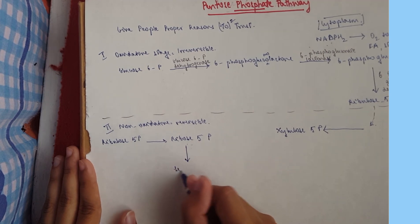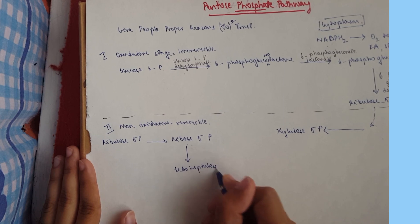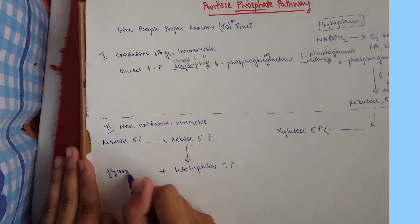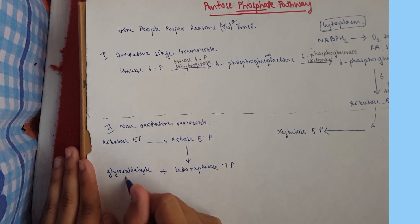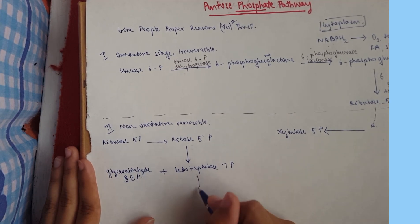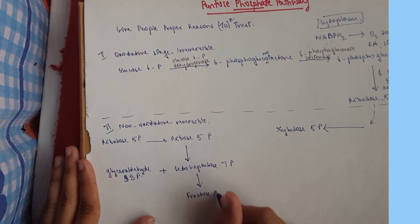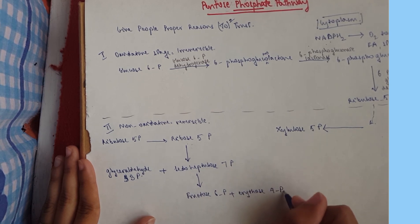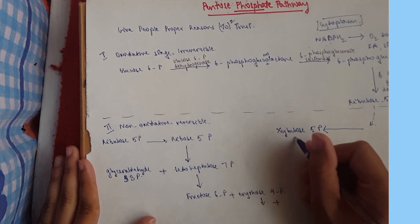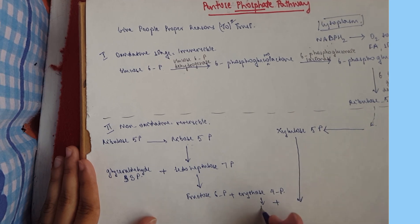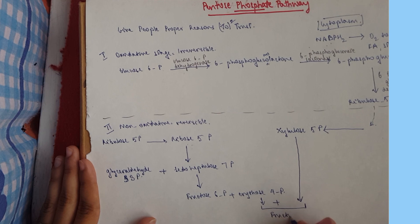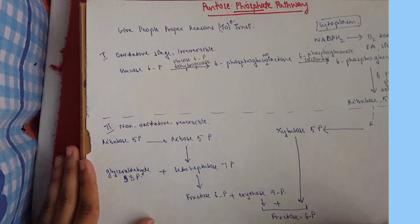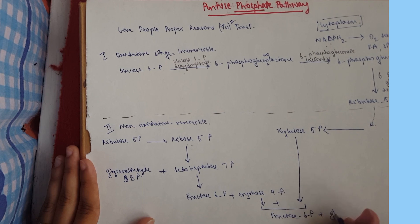Okay, so it goes down to give me sedoheptulose 7-phosphate plus glyceraldehyde 3-phosphate. Then this one goes down to give me fructose 6-phosphate plus erythrose 4-phosphate. Now this one goes down and we get back to this one, and it gives us fructose 6-phosphate and this can move on to become glucose 6-phosphate which can give us glucose like the glycogenesis pathway, and glyceraldehyde 3-phosphate.